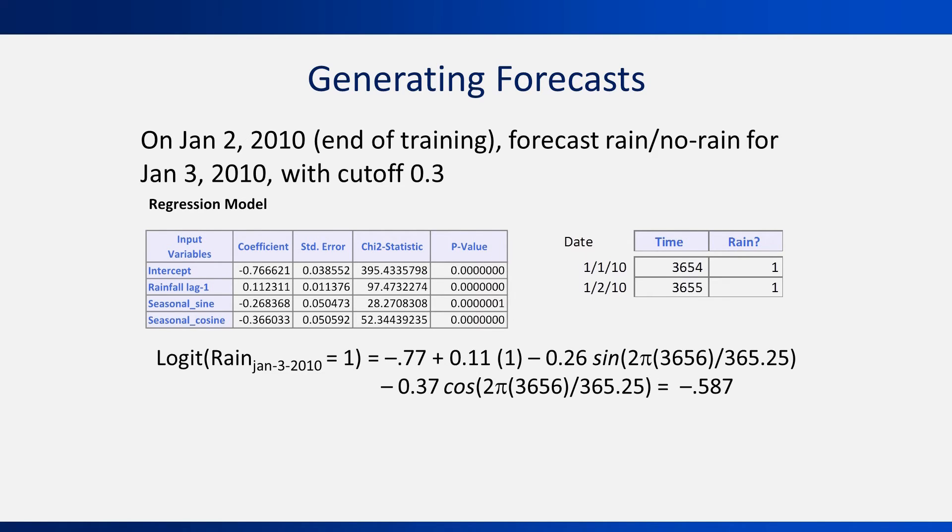We can use the coefficients in column two to compute a forecast by multiplying each by the appropriate term. In this case, the previous day rained, so we multiply 0.11 by 1. We then multiply the sine and cosine using the time index 3656, which corresponds to January 3rd, 2010. Multiplying the coefficients by the data gives us the forecasted logit with value of negative 0.587.